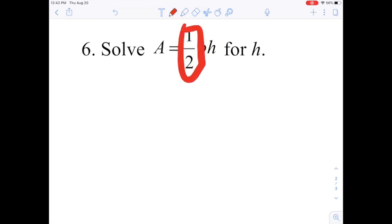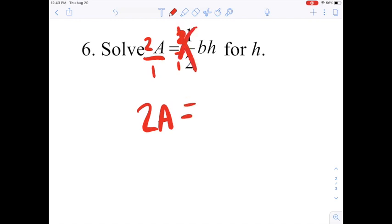If I ever have a fraction keeping my variable from being alone, I'll multiply by the reciprocal, two over one. But I got to do that to both sides, two over one. Well, this is really just going to be 2a, dividing by one doesn't do anything, equals bh.